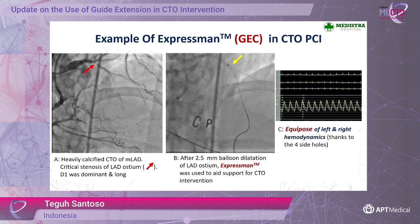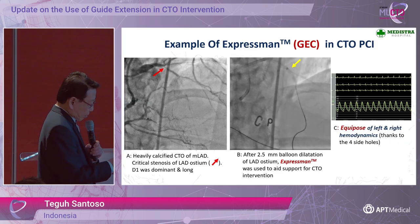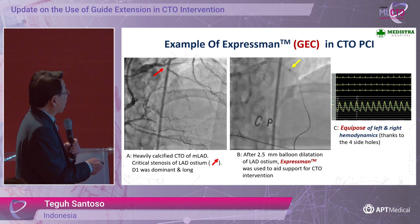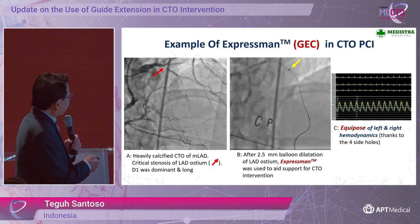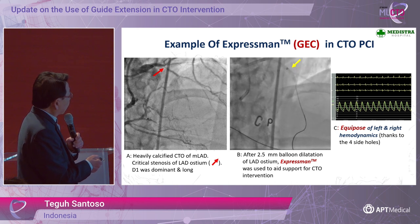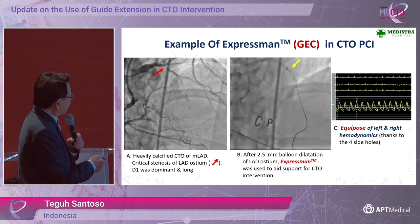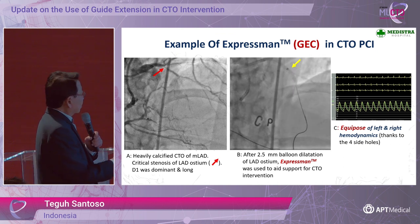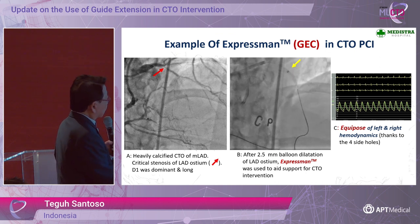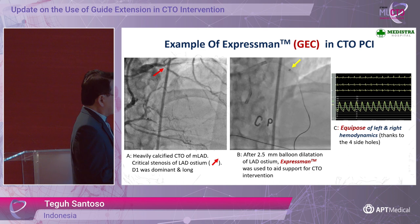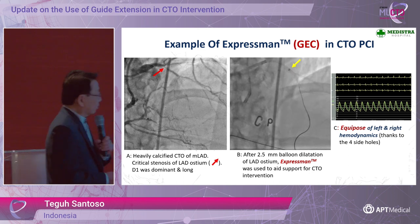Here is an example of the use of Expressman in one of our cases. The patient has a significant narrowing in the proximal osteo-LAD, and there is a long diagonal branch — we don't want to induce ischemia in this area. After balloon dilatation, we introduced the Expressman. This is an antegrade approach, and you can see the equilibration of left and right hemodynamics, thanks to the four side holes.